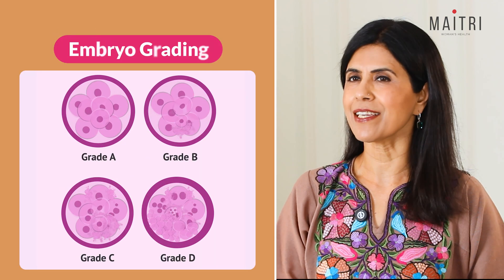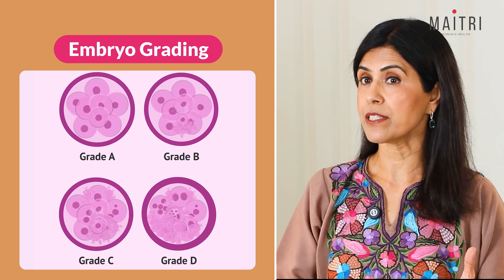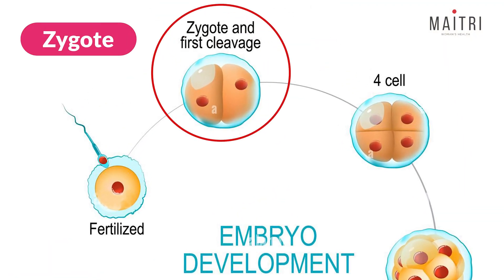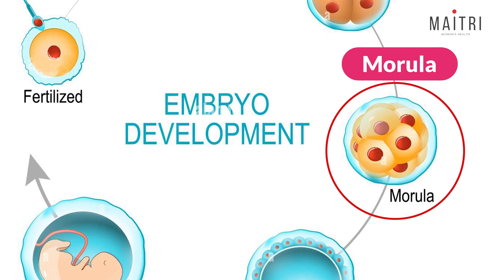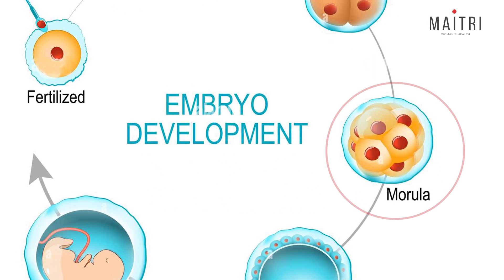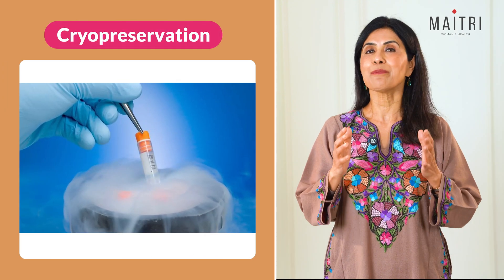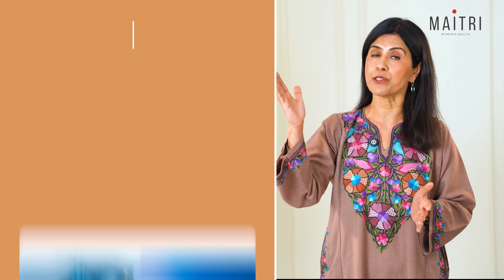Embryo grading: a system to assess embryo quality before transfer — better grades mean better chances of success. Zygote: a fertilized egg before it starts to divide into multiple cells. Morula: an embryo which develops into a ball of cells. Blastocyst: the morula develops a fluid-filled cavity and becomes a blastocyst. Cryopreservation: the process of freezing eggs, sperm, or embryos for future use.